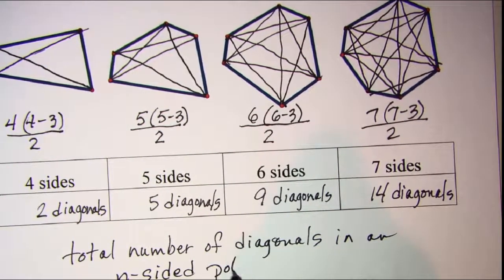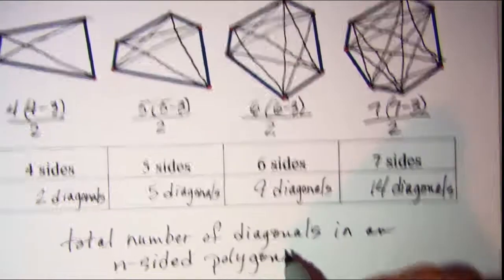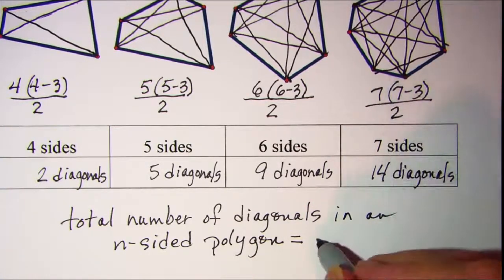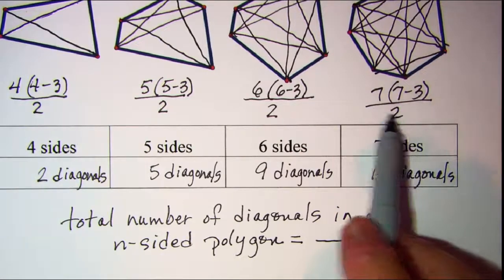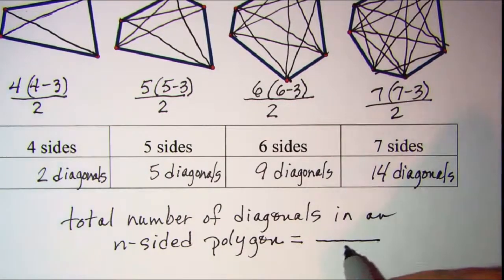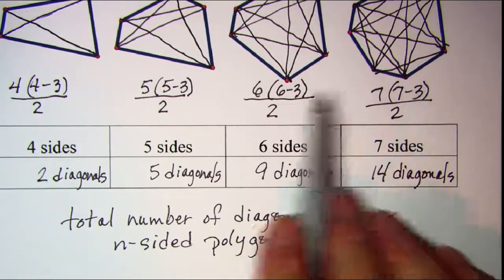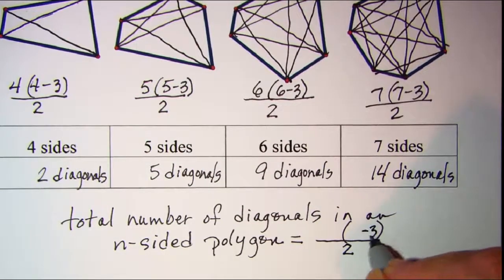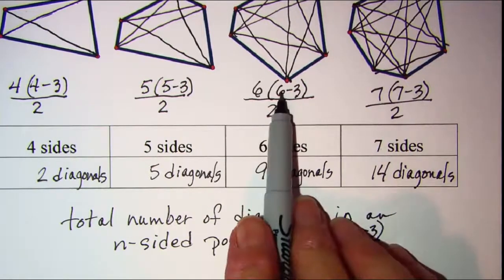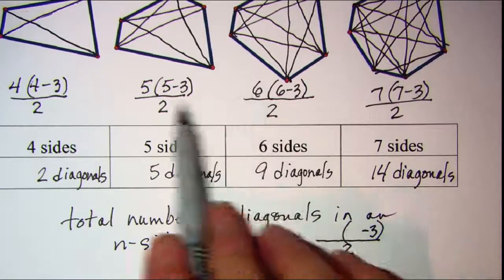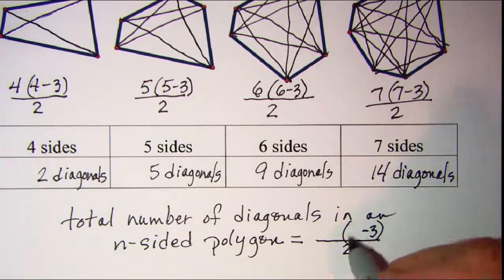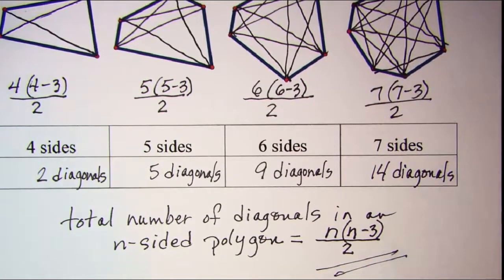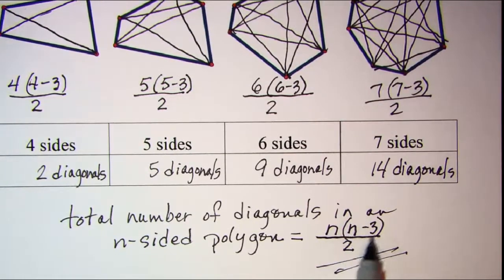Our total number of diagonals formula comes from looking at what stays the same across all cases. We always have a two in the denominator, and in the parentheses we're always subtracting three. The other number is n, the number of sides. So our formula is: number of diagonals equals n times (n minus 3), divided by 2.